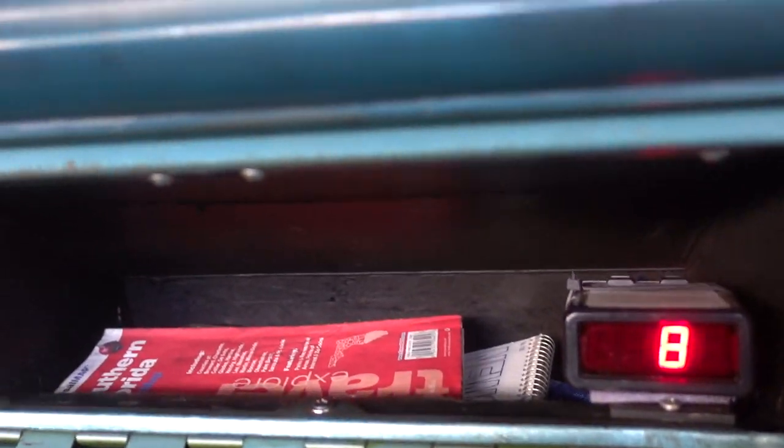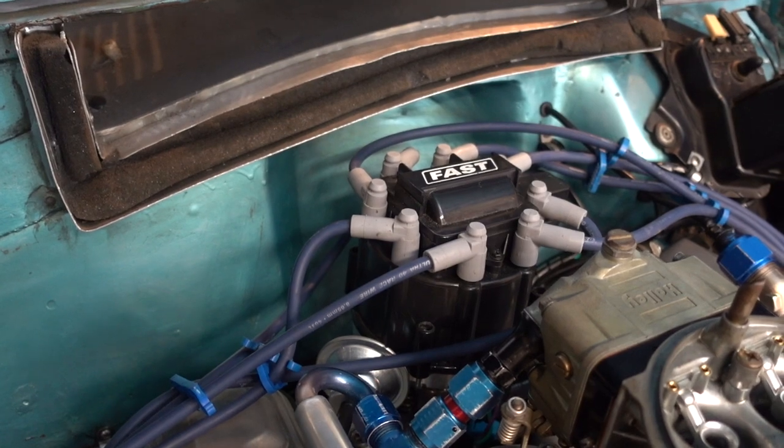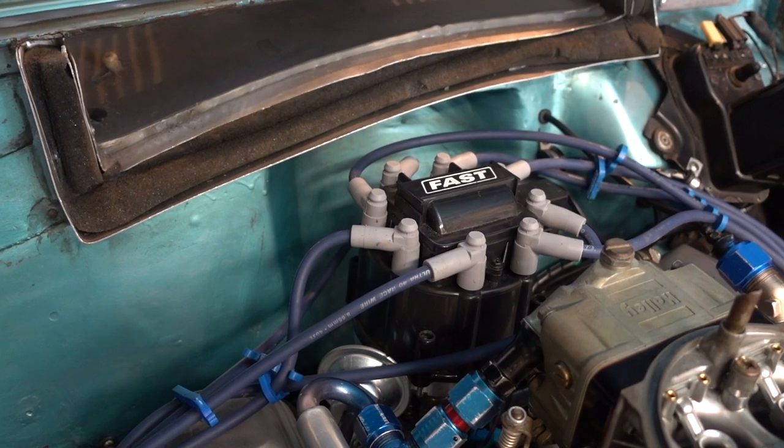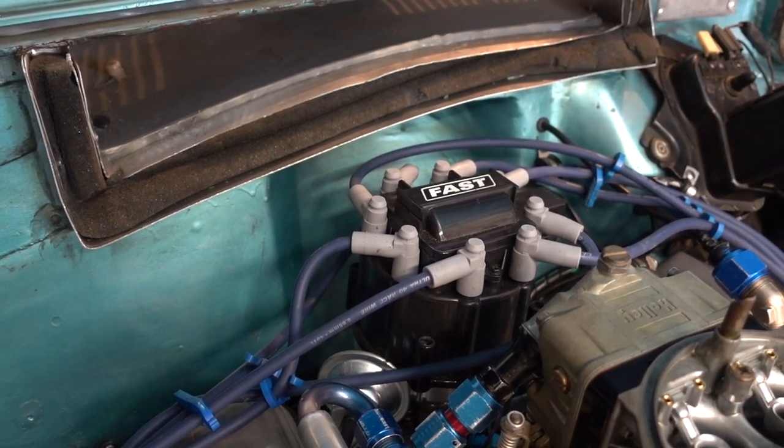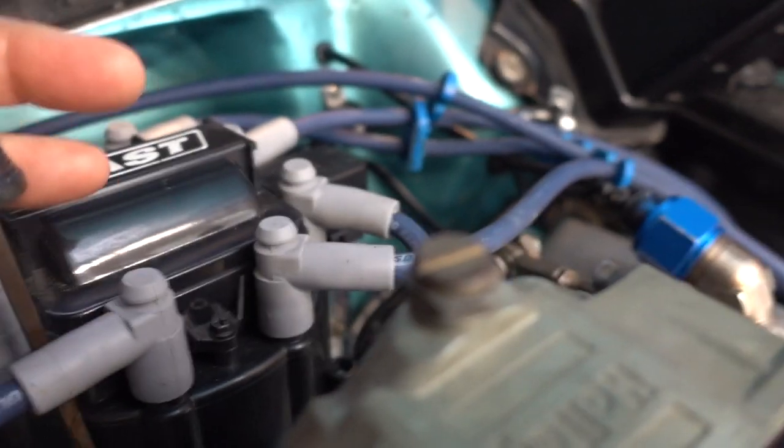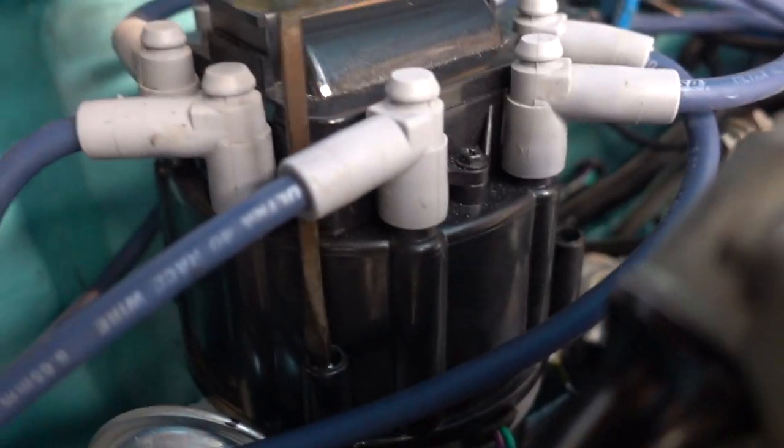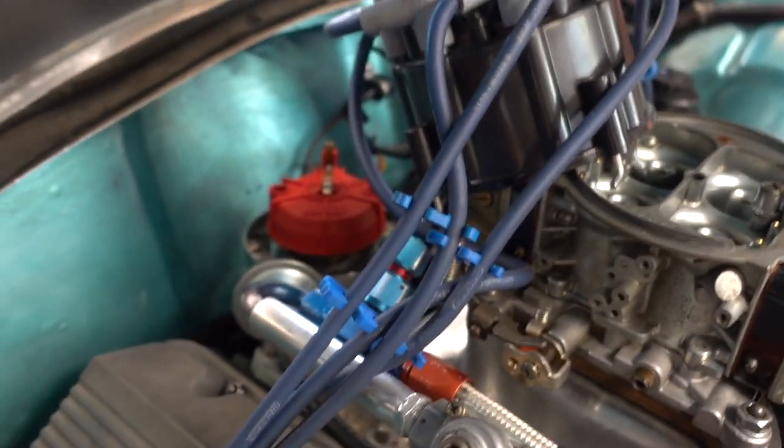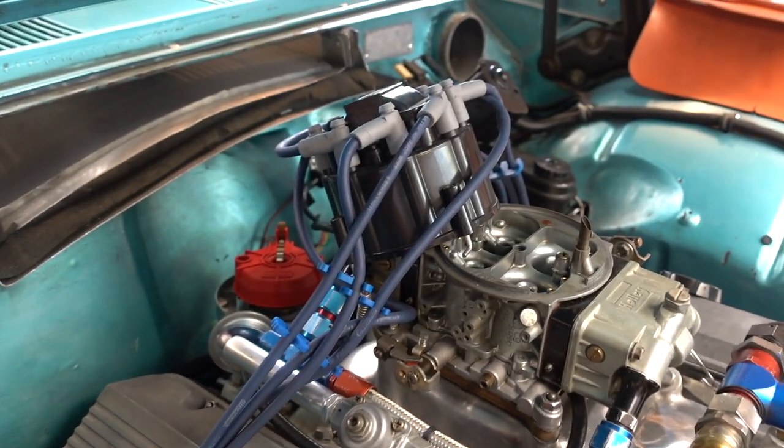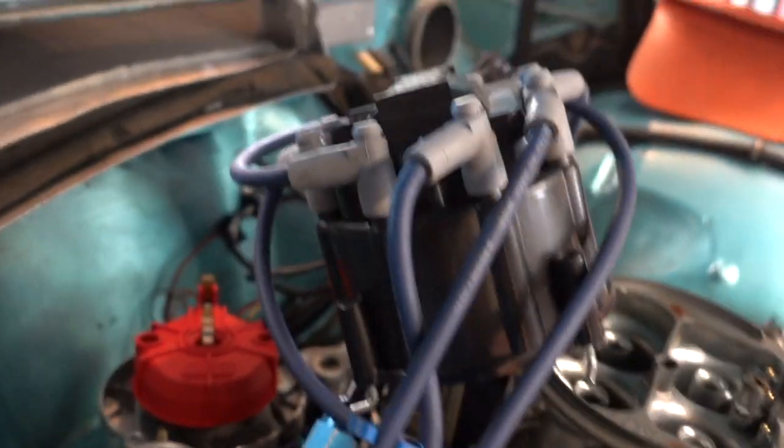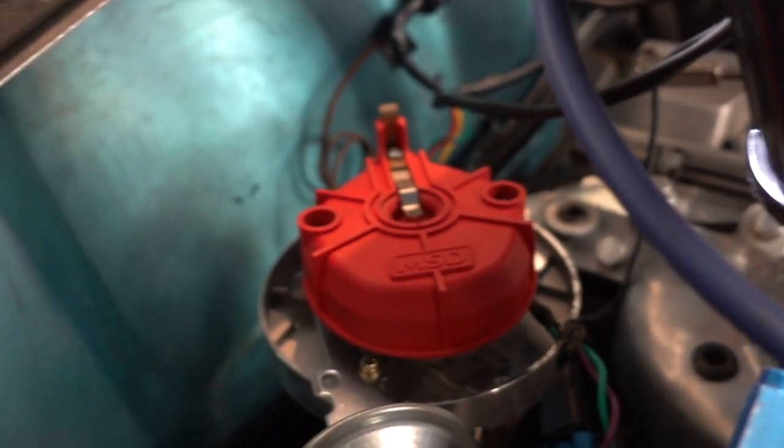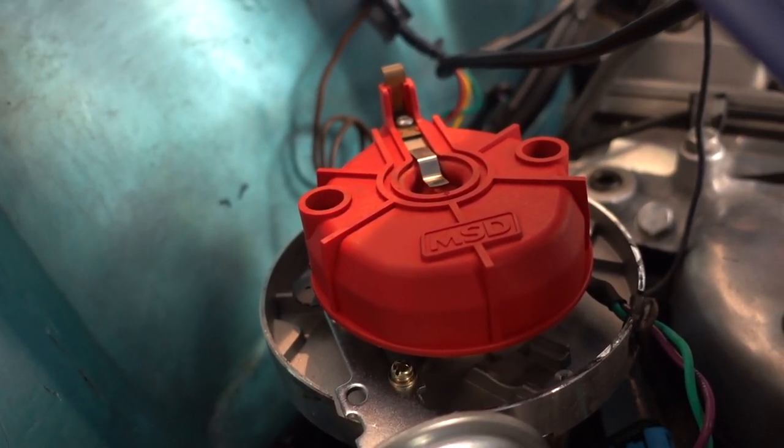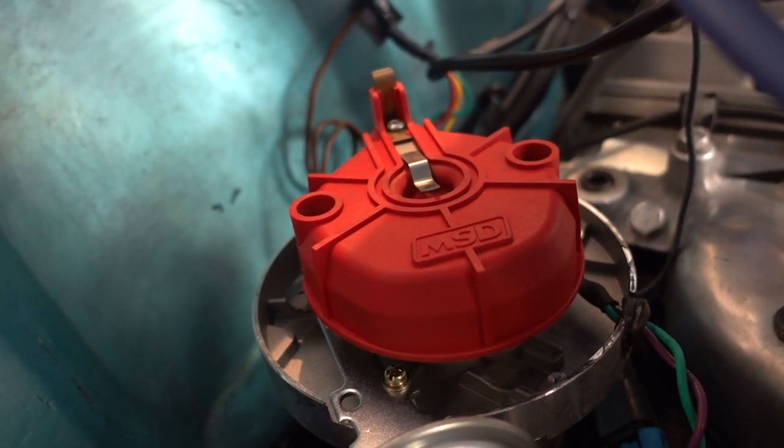So I'm going to take the cover off of this distributor, and we'll look inside and I'll show you what needs to be done, and I'll show you the numbers that I came up with that work for me. So here I've got the cap off the distributor, and you're looking at the rotor. Now I left the rotor on just for one reason. This is an MSD rotor.